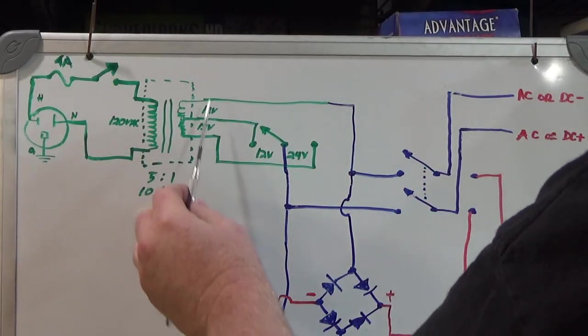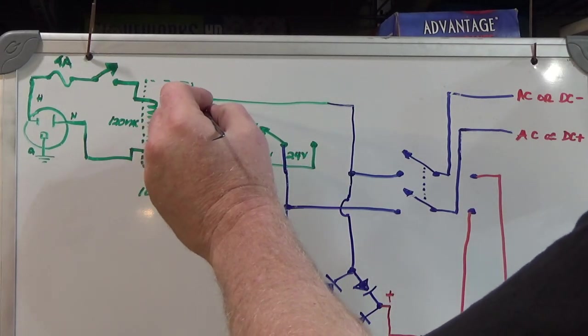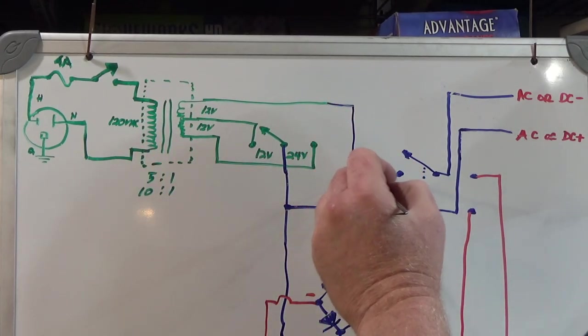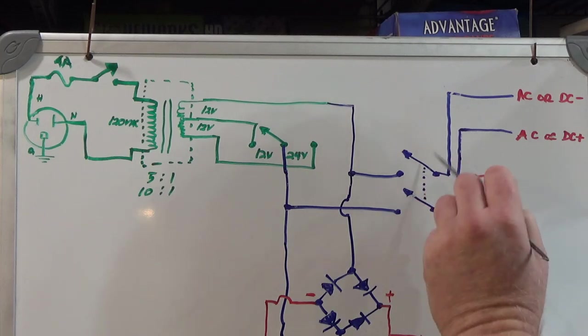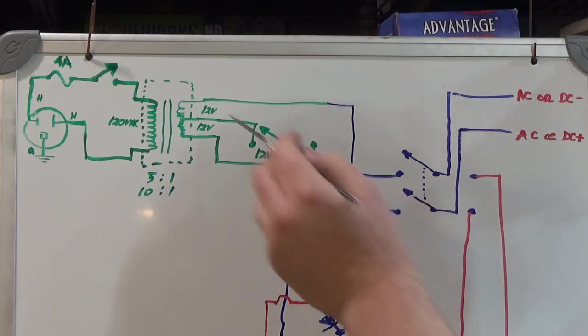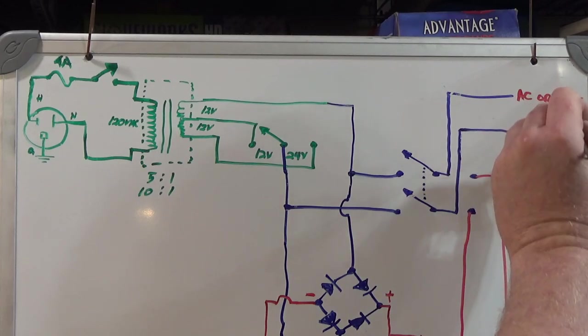So the transformer on this side, we take one output of this transformer, we call it our common, and that will just flow right through the switch if it's in AC mode, right to your output. And it's just our common AC output right here, as you can see.